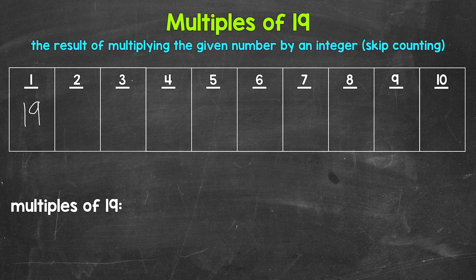Then we have two times 19. That gives us 38. 38 is the second multiple of 19. Then we have three times 19. That's 57.